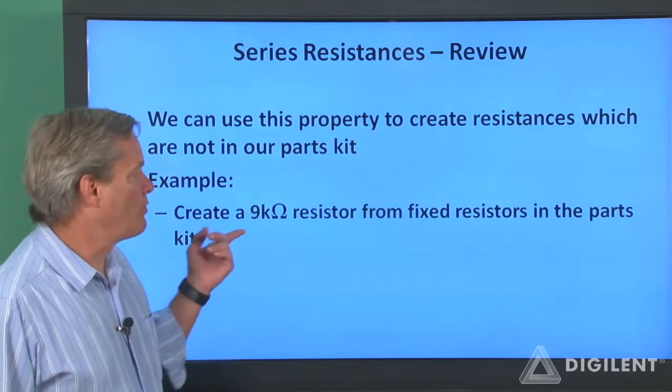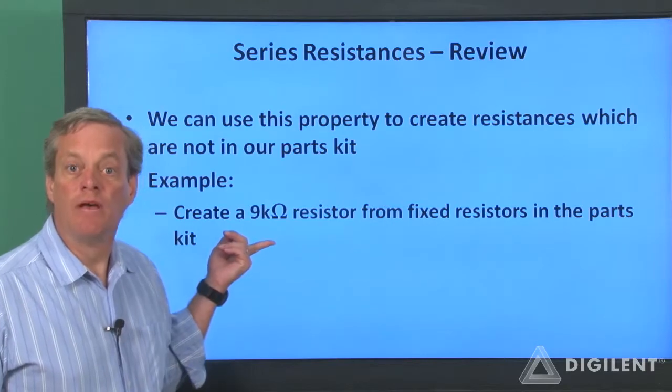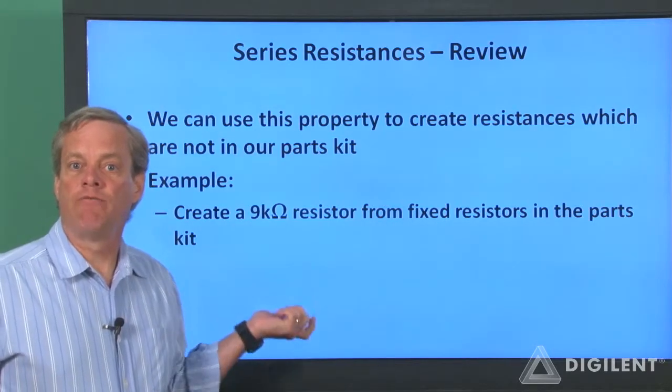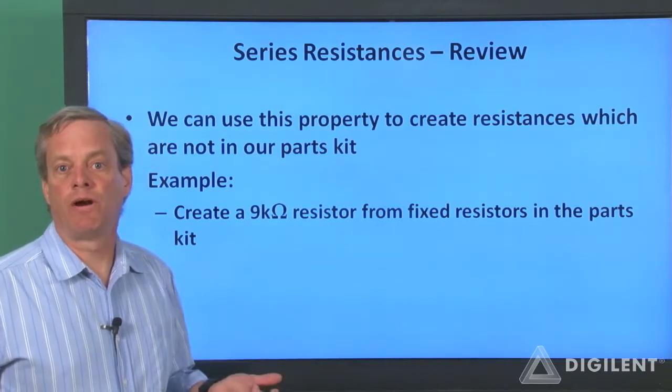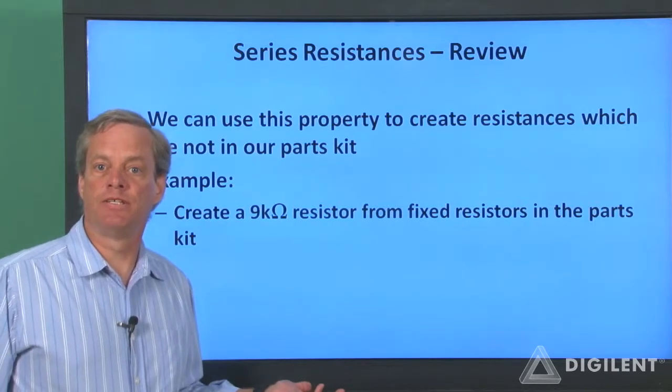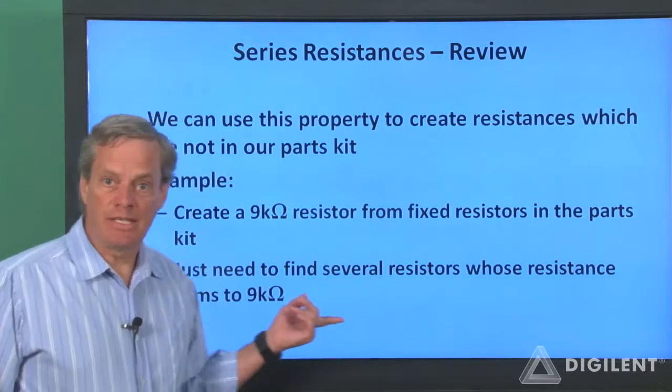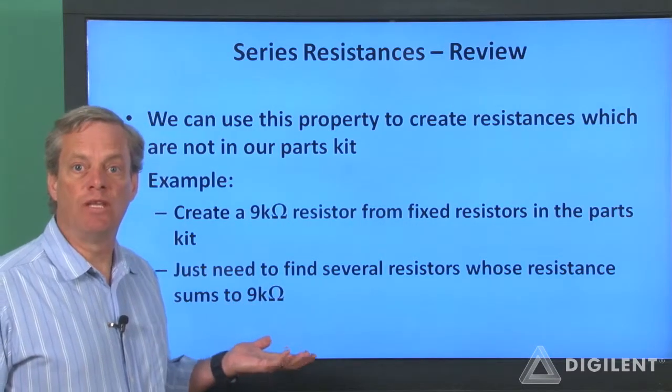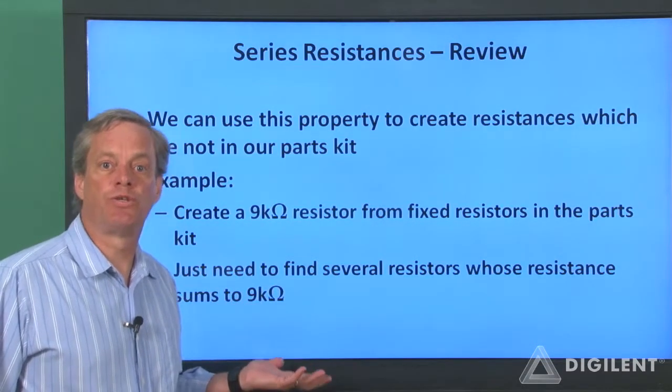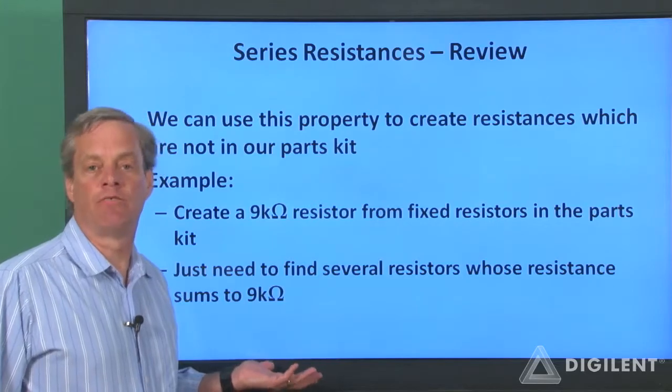For example, suppose we want a resistance of 9 kiloohms. This resistance value is not available as a single resistor in our parts kit, so let's see if we can make the resistance value out of our available resistors. Our series resistance formula just says that we need to find several resistors whose resistances sum up to the desired value.